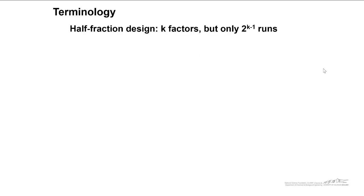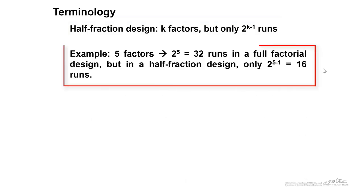Let's talk about some terminology. A half fraction design, that's when you're only carrying out half of the number of experimental treatment combinations as you would in a full factorial design. We have k factors, but only 2 to the k-1 runs. And that's how we refer to these as 2 to the k-1. For example, if we had five factors, there would be 2 to the 5th or 32 runs in a full factorial design. But in a half fraction design, we only need 2 to the 5-1 or 16 runs.